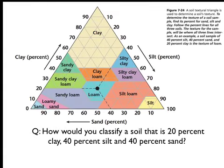Okay, just as a review, here is a soil textural triangle and the question is asking how would you classify a soil that is 20% clay, 40% silt, 40% sand.